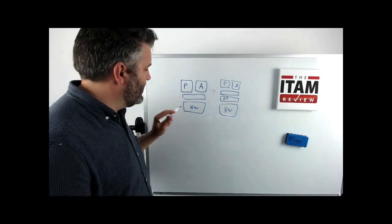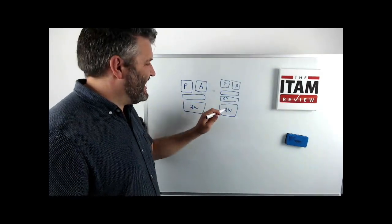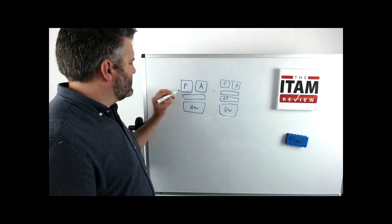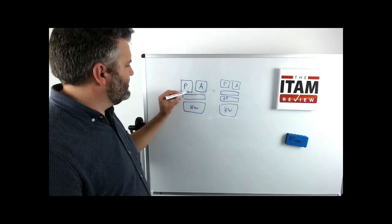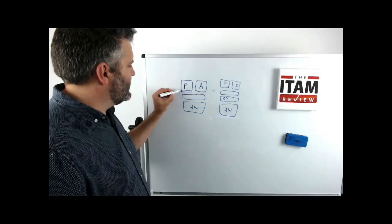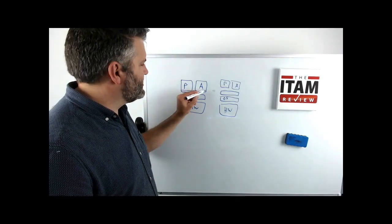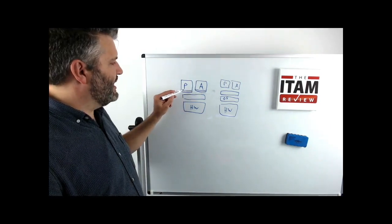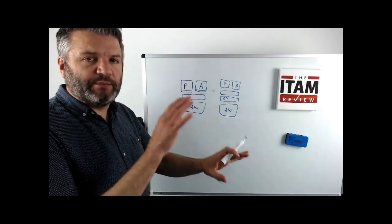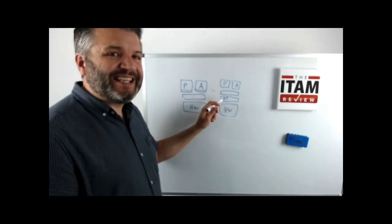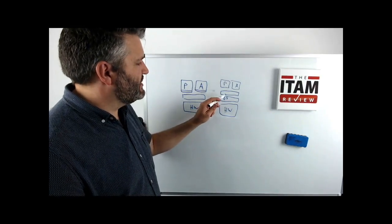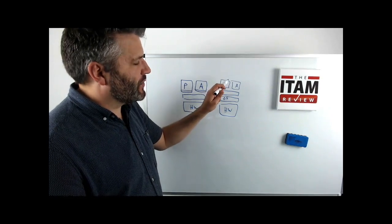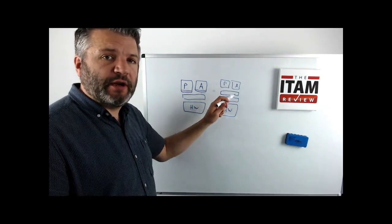The main difference between a virtual machine and a container is that a container doesn't have an operating system. In the virtual machine setup, the payroll app has an operating system and so does the accounting system — so one might be Microsoft, one might be Linux — they run as completely independent machines. Whereas in the container environment, the containers share the one operating system and don't each have their own.